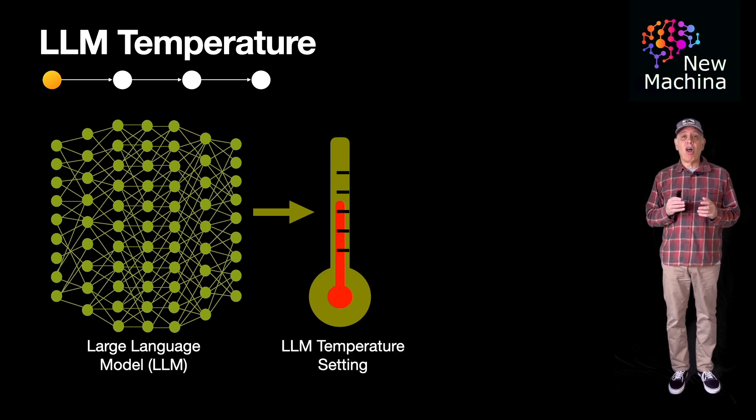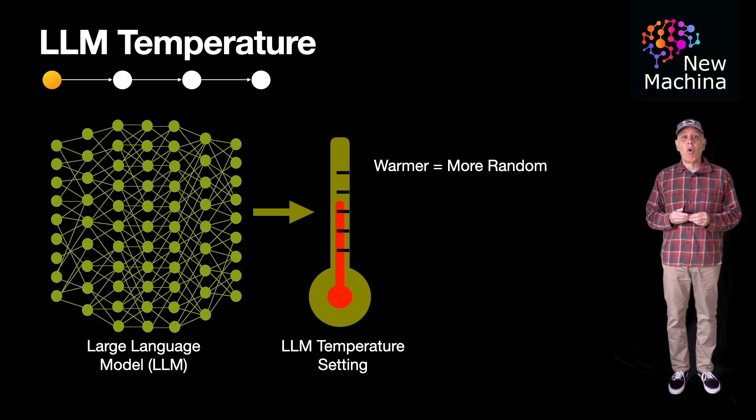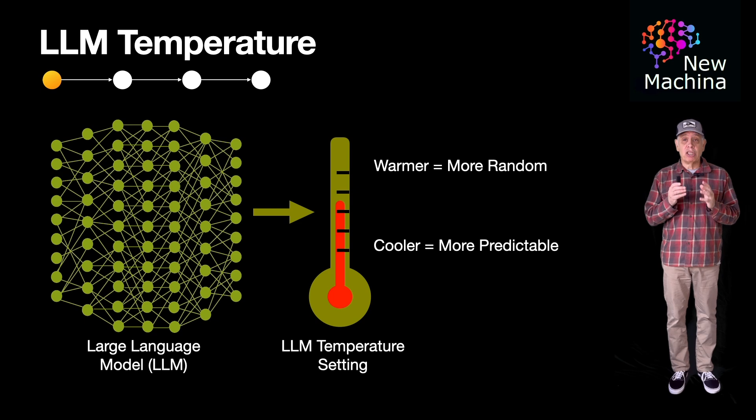In the context of a large language model like chat GPT or any other LLM on the market, temperature refers to a setting that adjusts the randomness or unpredictability of the model's response. A higher temperature leads to more varied and creative outputs, while a lower temperature results in more predictable and conservative results.